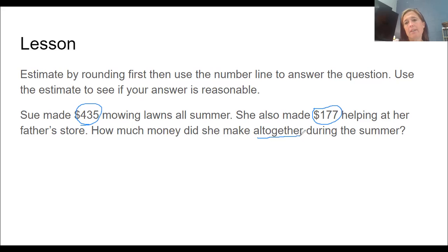So that word all together helps us to understand are we adding or are we subtracting? All together means that we are adding the numbers together to find out what her total income or how much she made was for the summer. Before we do, let's go ahead and do our rounding.